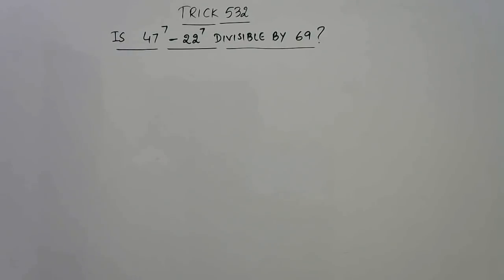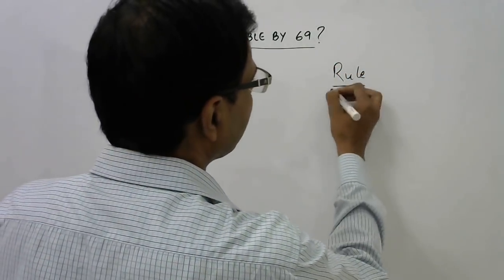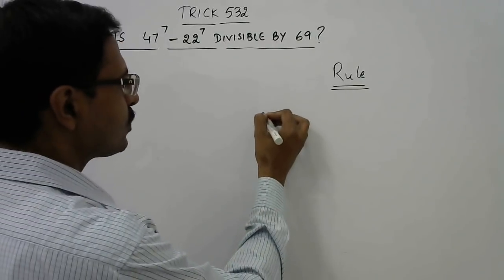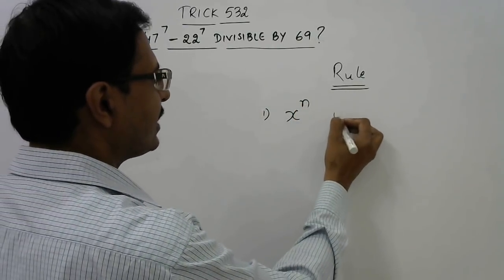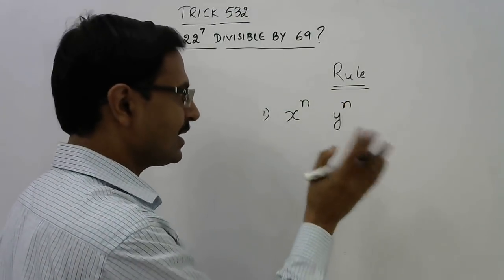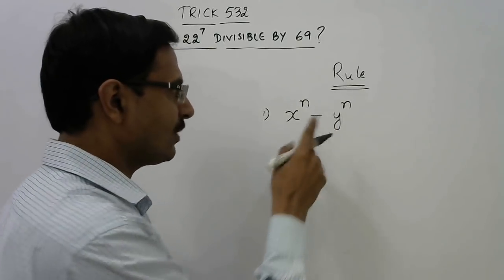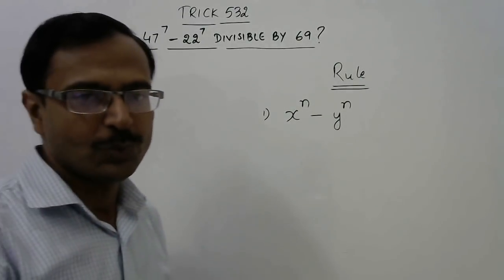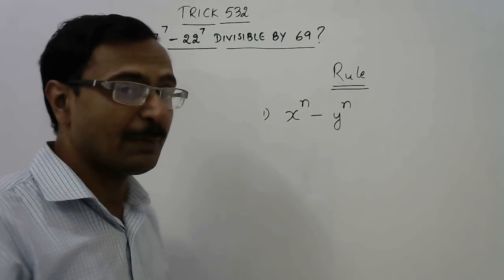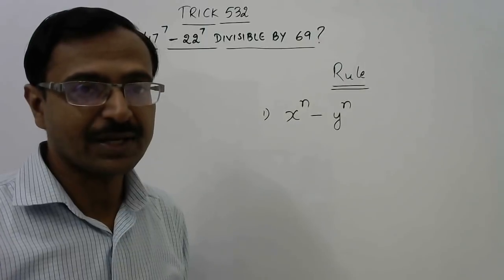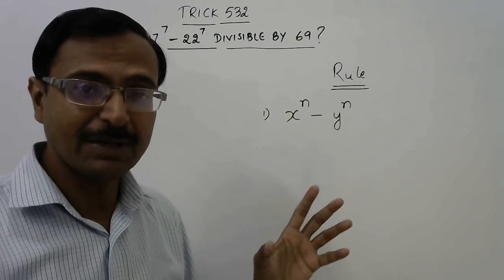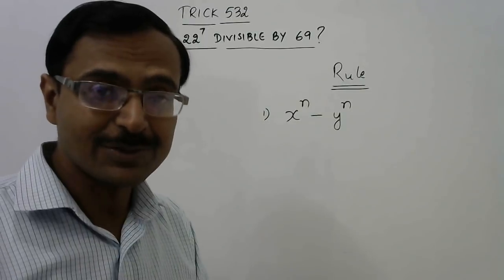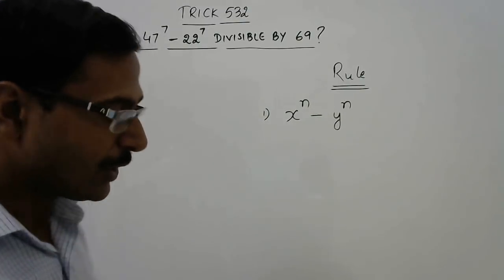So let's take up the rule first. The rule says whenever you have two numbers raised to the same power like x raised to power n and y raised to power n, the power is same but the bases are different and we need to subtract. Now obviously x is greater than y, so x power n minus y power n will be a positive term. The number by which the divisibility is to be checked is usually either the sum of the bases x plus y or the difference x minus y.